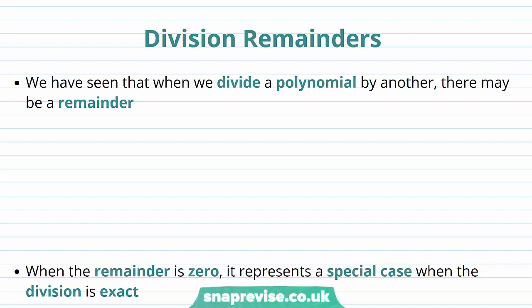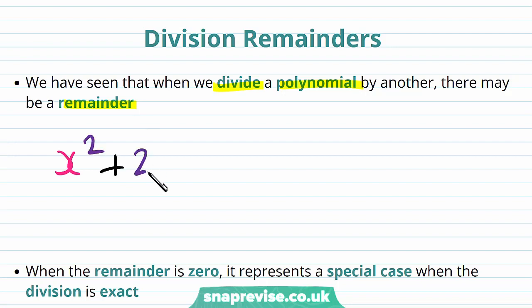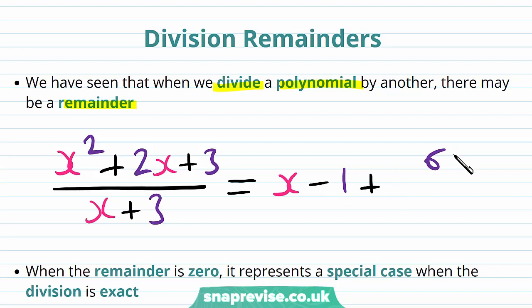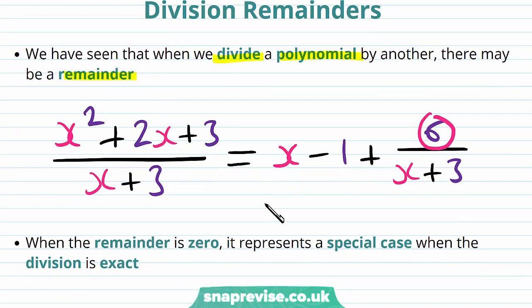So how in general can we find division remainders easily? We've seen that when we divide a polynomial by another there may be a remainder. Namely, if we divide x squared plus 2x plus 3 by x plus 3, which we can do by polynomial long division, then we obtain x minus 1 plus the number 6 over x plus 3. This number here, 6, is our remainder.